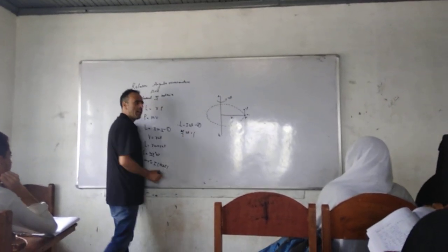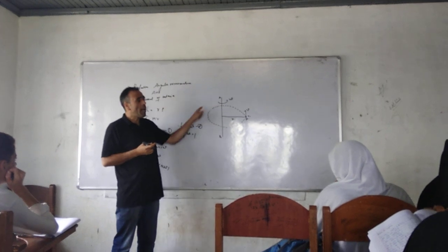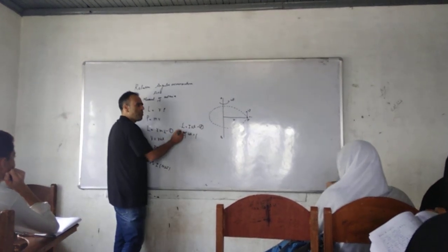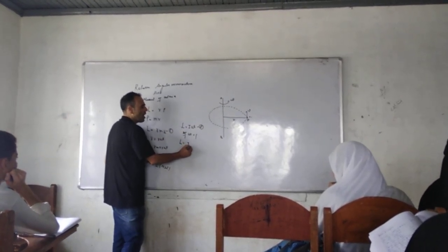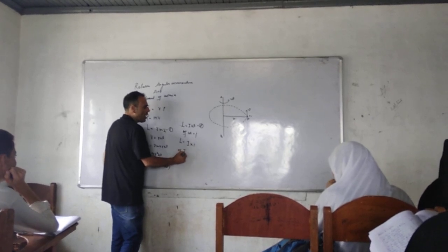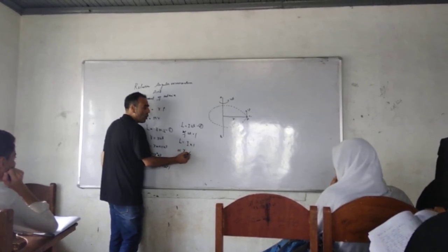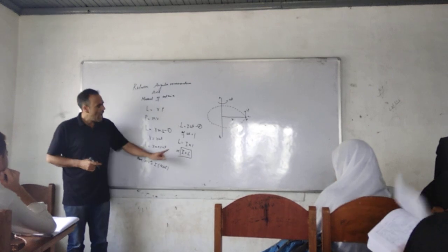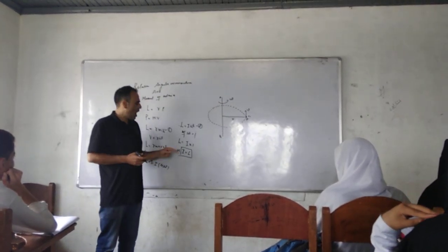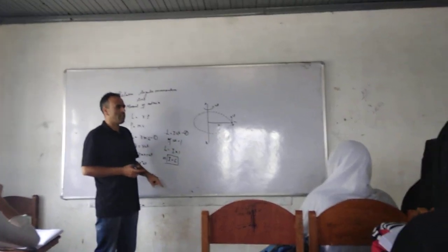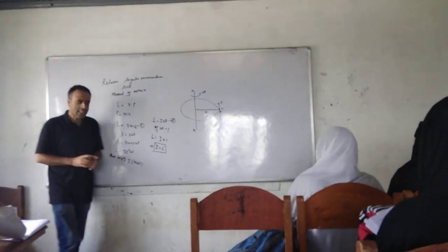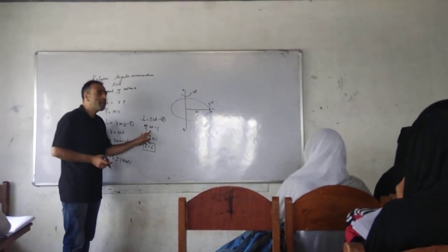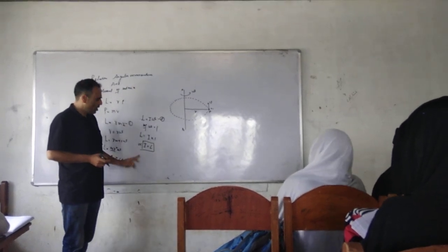If omega is equal to 1 — that means if the particle is rotating about the axis AB with unit angular velocity — then equation second becomes L is equal to I into 1, or I is equal to L. So from this equation, we can define moment of inertia: the moment of inertia of a particle about a given axis is equal to the angular momentum of a particle rotating with unit angular velocity about that axis.